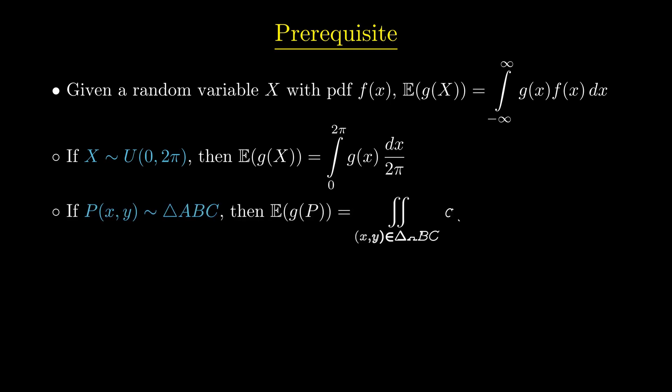Similarly, if a point P with coordinates x, y is uniformly distributed in a triangle, then the expected value of g will be the double integral of g times dy dx divided by the triangle's area.